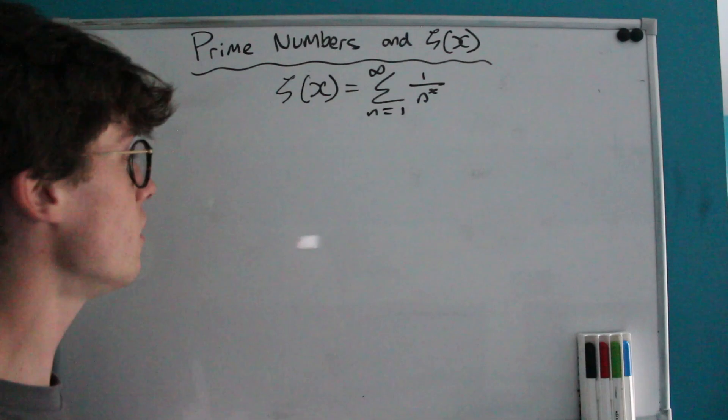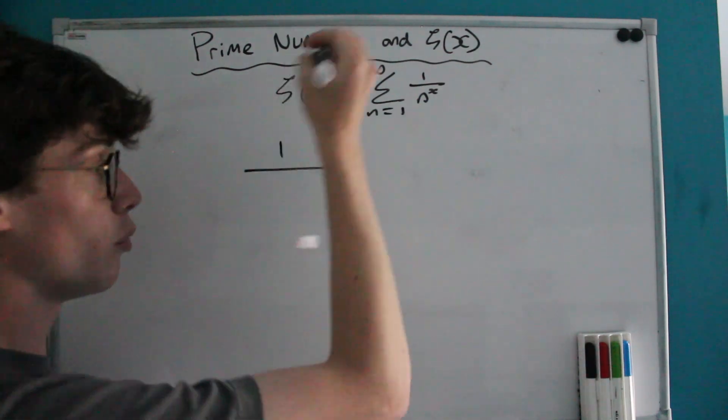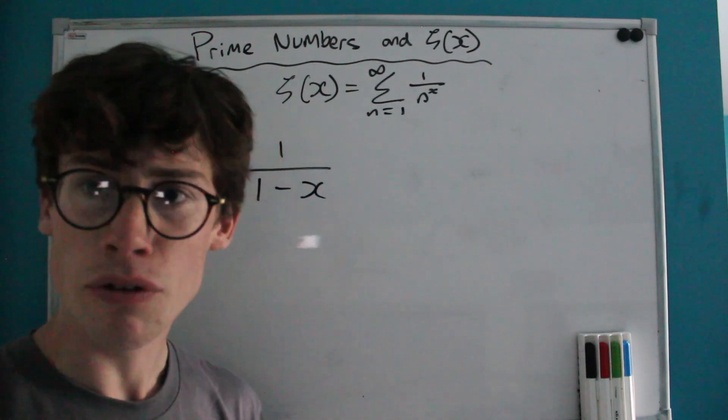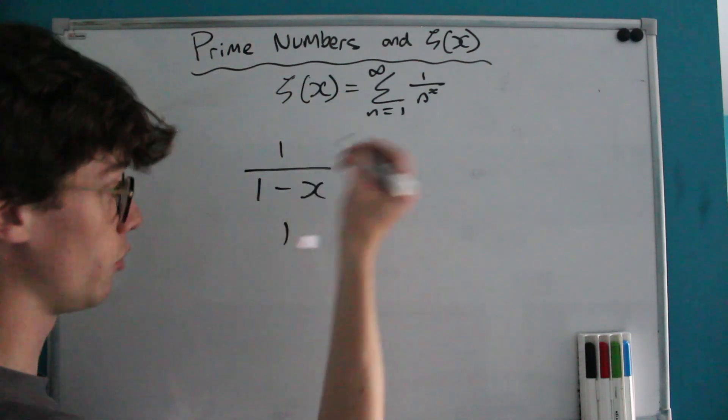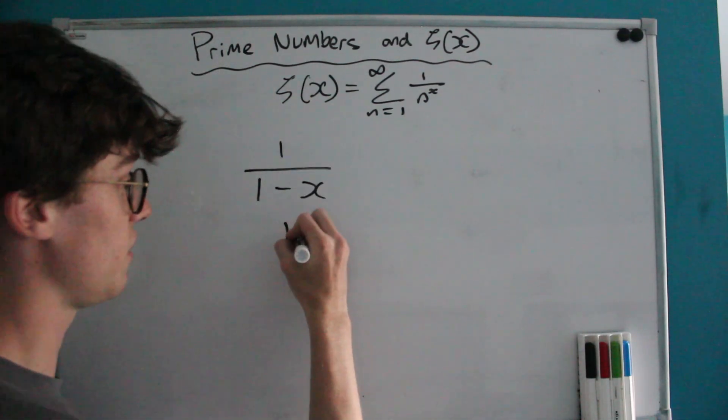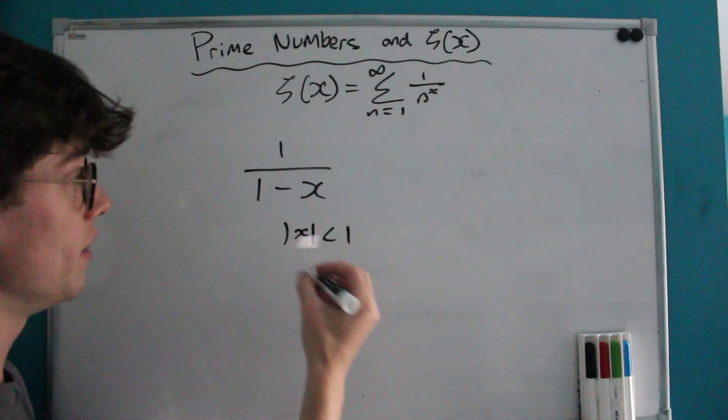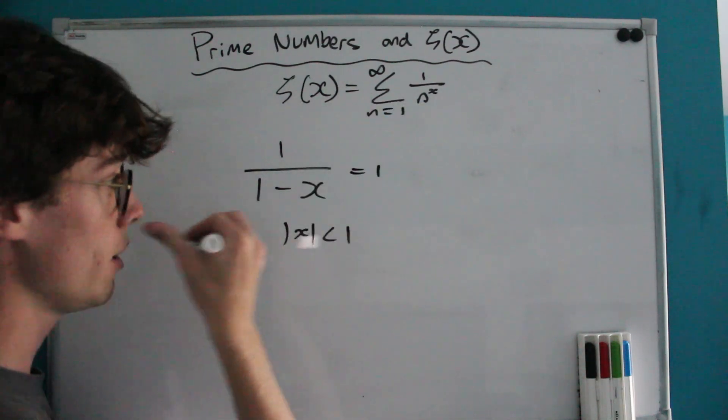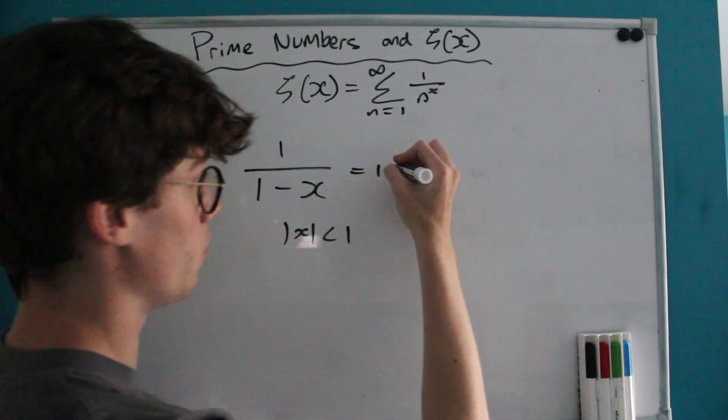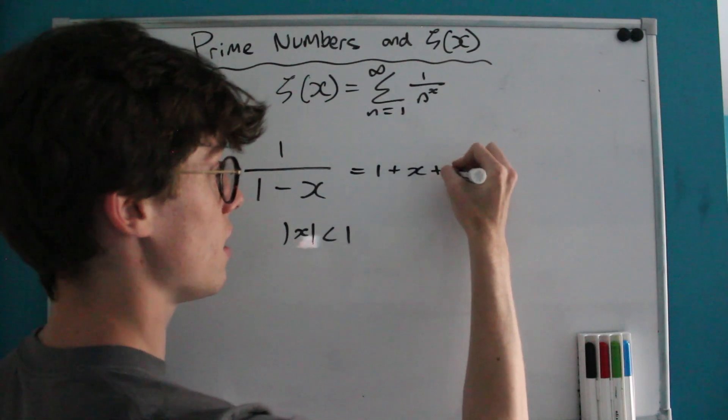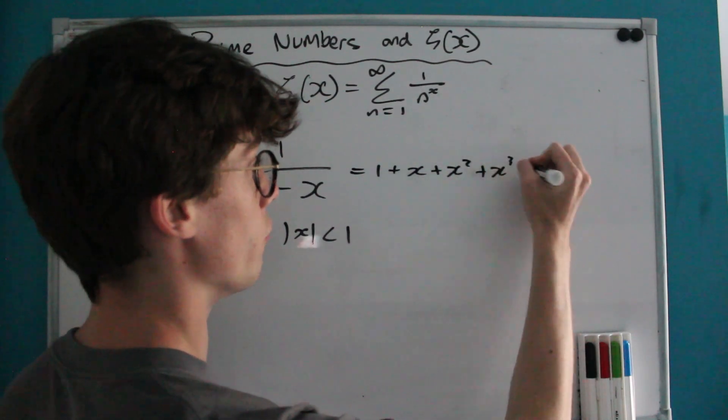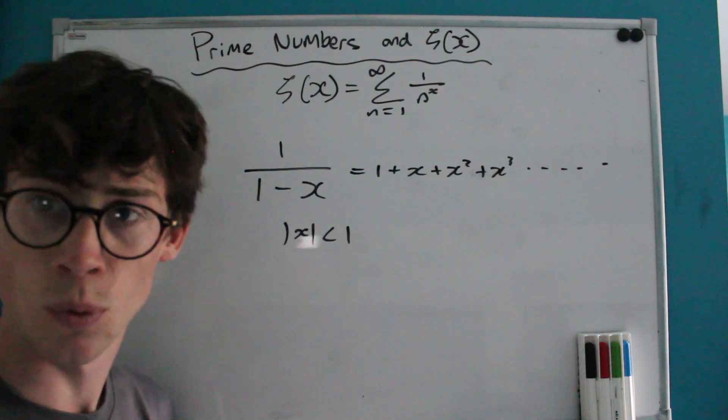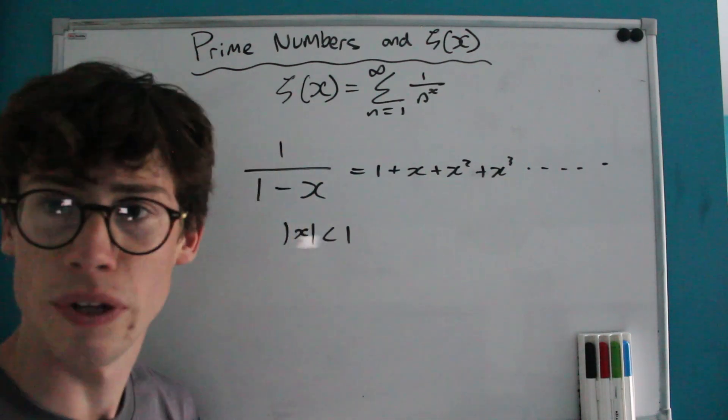And where we're going to start today is with looking at something which is a lot more simple and easy to understand, a geometric series. And we know the formula for geometric series as long as our common ratio, which in this case is x, is less than 1, is a over 1 minus r, where a is our first term, in this case which is 1, and r is our ratio, which in our case is x. And we can calculate the sum of this infinite series off to infinity as long as the absolute value of x is less than 1 using this formula.